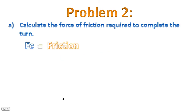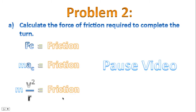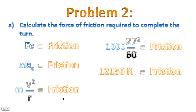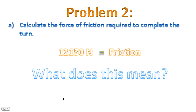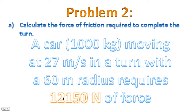We start off with our centripetal force statement. Which force is helping us to turn? It's friction. Fc is always Ma, just like Fnet is Ma. Substituting our equation for centripetal acceleration, and substituting mass, speed, and radius, the friction works out to be 12,150 newtons. This means that for a 1,000 kg car moving at 27 meters per second in a turn with a 60-meter radius, it requires 12,150 newtons of friction to complete the turn.